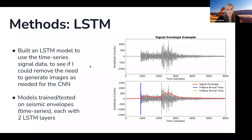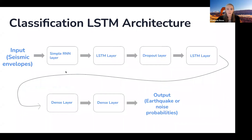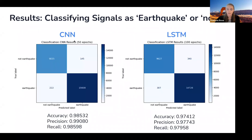The second type of model I used was LSTM. I wanted to build LSTM models to use the time series signal data to see if I could remove the need to generate images, as was needed for the CNN. The models were trained and tested on seismic envelopes instead of the raw signal data. Here is a raw earthquake waveform, and the red line shows the envelope of that waveform. The classification LSTM architecture inputs the seismic envelopes, then there's a simple RNN layer, an LSTM layer, dropout layer, another LSTM layer, and two dense layers.